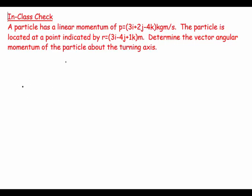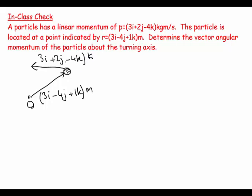So let's visualize. Here's my turning axis, and at some point given by 3i minus 4j plus 1k meters, I have a particle. And that particle has a momentum of 3i plus 2j minus 4k kilogram meters per second.